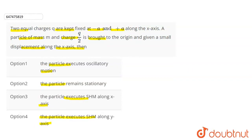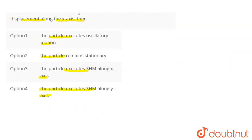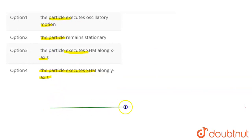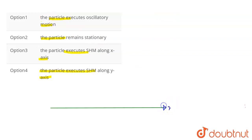Here we can see in the question we have two charged particles, both are the same charge Q. We keep one at x equals minus A and the other at x equals plus A. The charge Q/2 is given a small displacement along the x-axis from the origin.